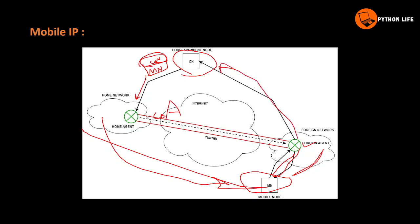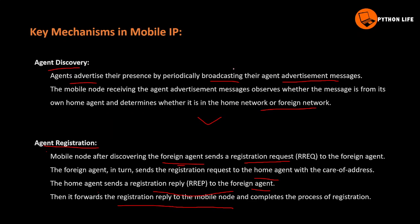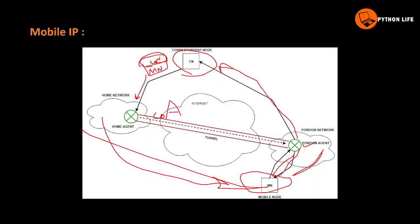This is the mobile IP summary. The key components are: home agent, foreign agent, agent registration, agent discovery, and tunneling — these are the three main mechanisms. Hand-offs, connections, and sessions are also part of mobile IP.